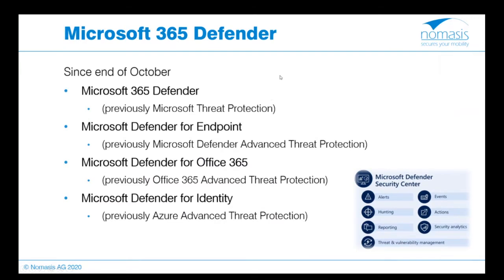Here is an overview of the new naming convention. Microsoft Threat Protection is now called Microsoft 365 Defender. The part I will show you was previously called Microsoft Defender Advanced Threat Protection. The Office 365 part was previously called Office 365 ATP. And the identity component is now called Microsoft Defender for Identity.